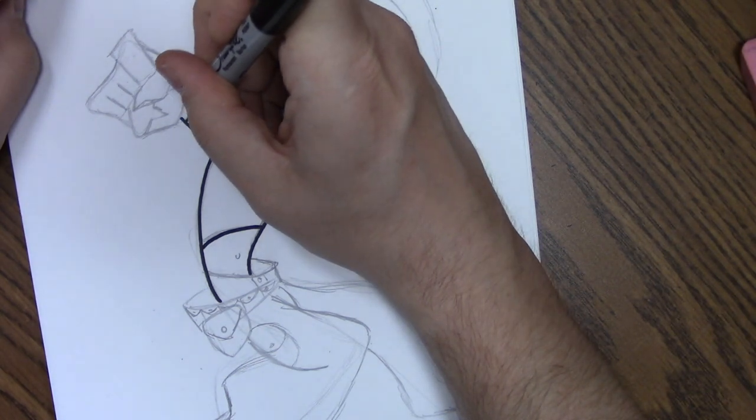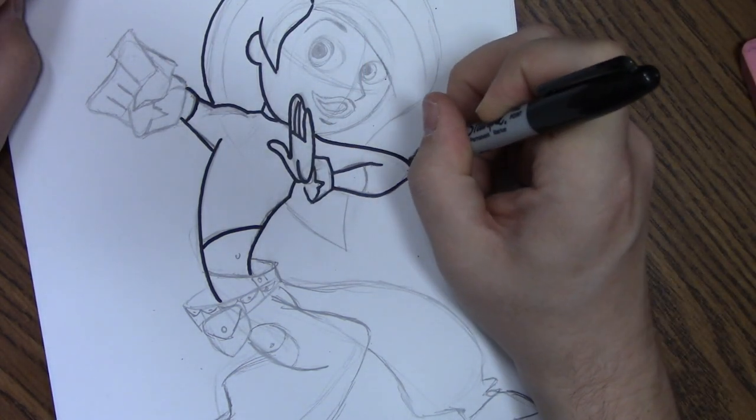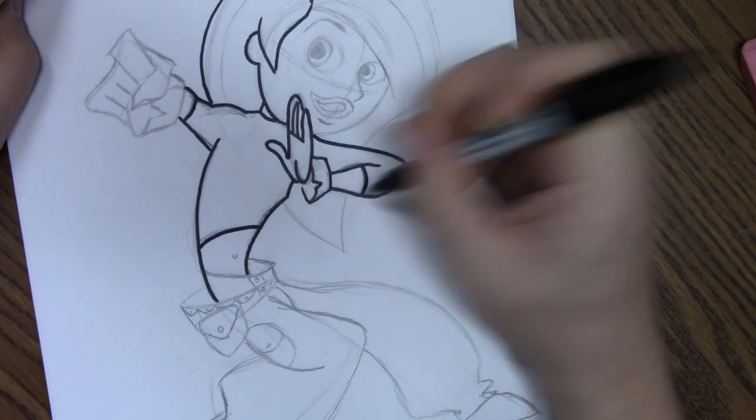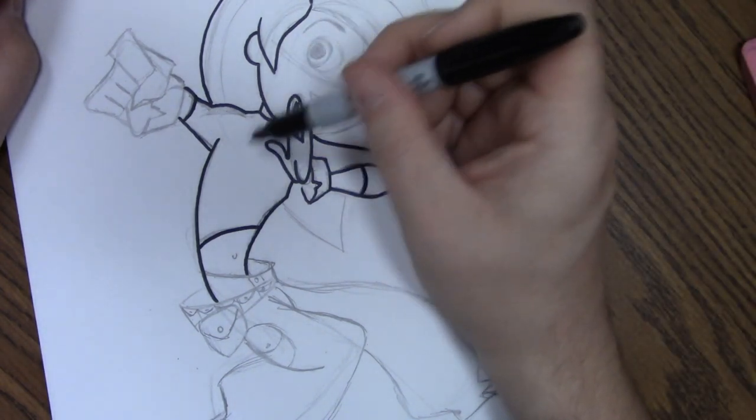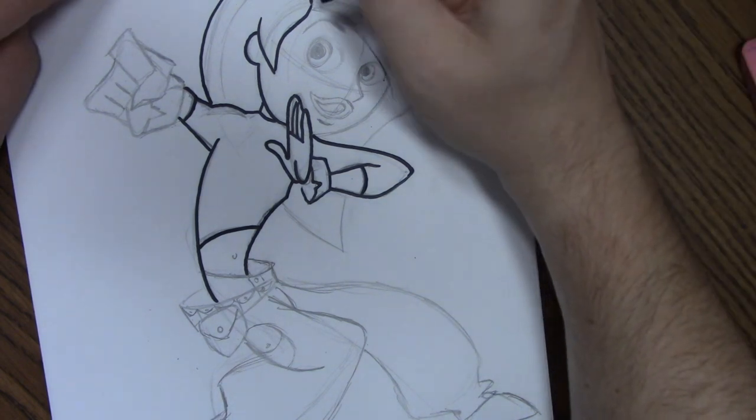This whole side of the body is just one long line. I am going to do this line for this part of the arm, and that's her cuff. All of this later on is going to be black, but we'll wait on that. Let's do everything else.